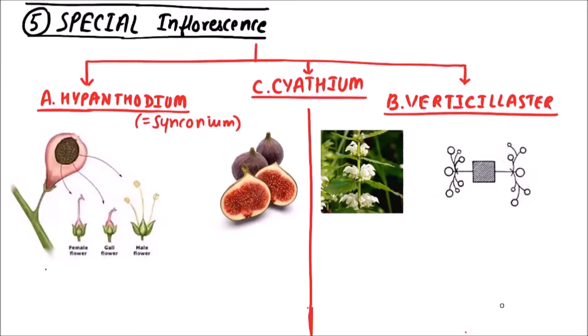Welcome to Studio Biology. In this video we are going to discuss the various types of spatial inflorescence. These are mainly three types: hypanthodium, verticillaster, and cyathium. In this video we will discuss the hypanthodium and verticillaster.